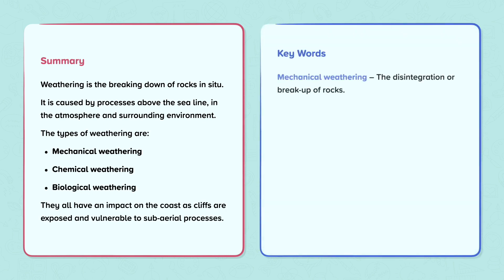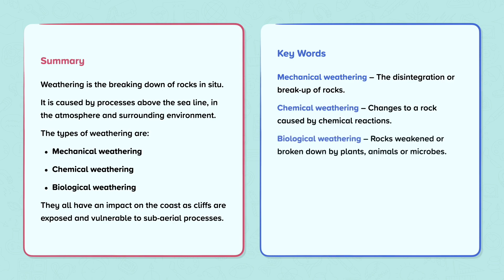Our key words. Mechanical weathering: the disintegration or break-up of rocks. Chemical weathering: changes to a rock caused by chemical reactions. Biological weathering: rocks weakened or broken down by plants, animals or microbes.